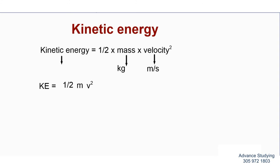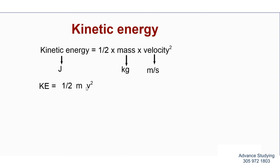And energy — any energy — we measure in joules. You should know that by now. So there we have it: joules for energy, half is just half, kilograms for mass, meters per second for velocity. The shortened form of that is: kinetic energy equals half times the mass times velocity squared.